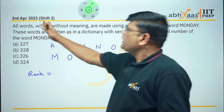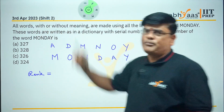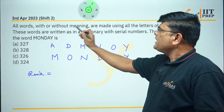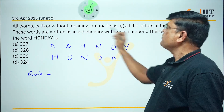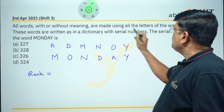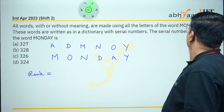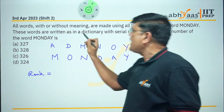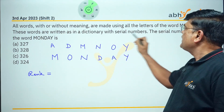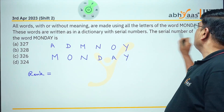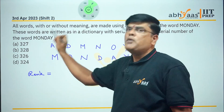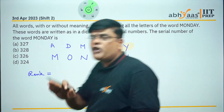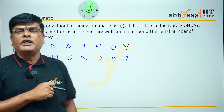We have one question from JEE 2023, April second shift. The question is: all words with or without meaning are made using all the letters of the word MONDAY. These words are written as in a dictionary with serial numbers. We have to find the serial number — that is, the rank — of the word MONDAY.